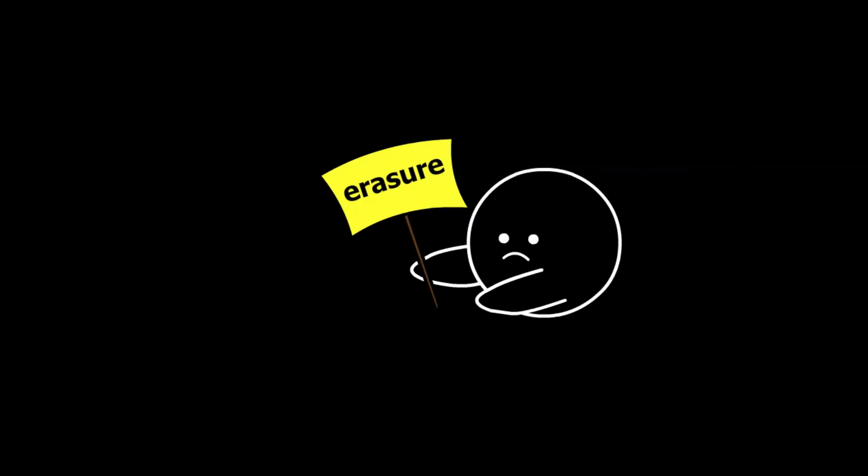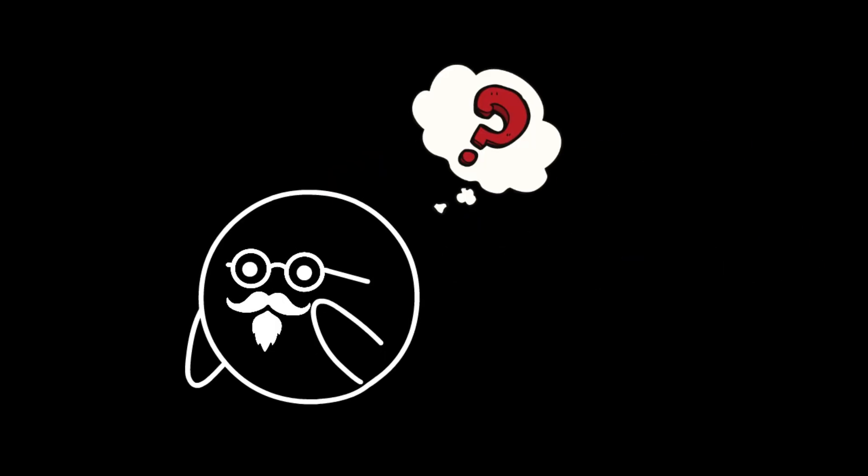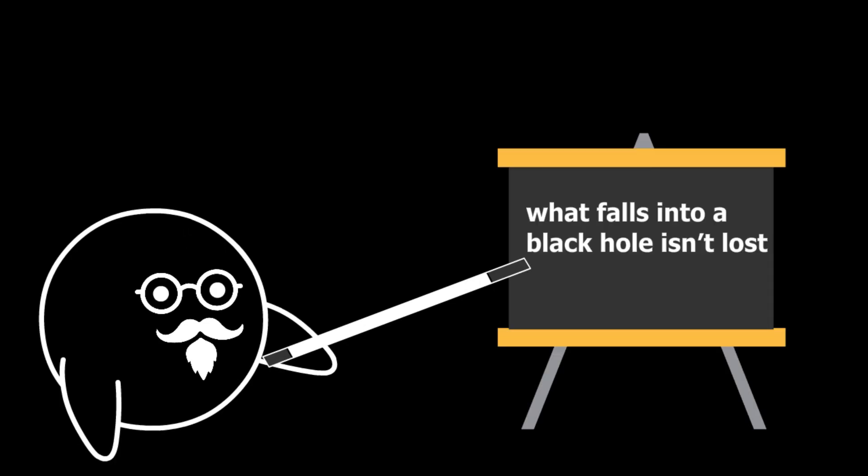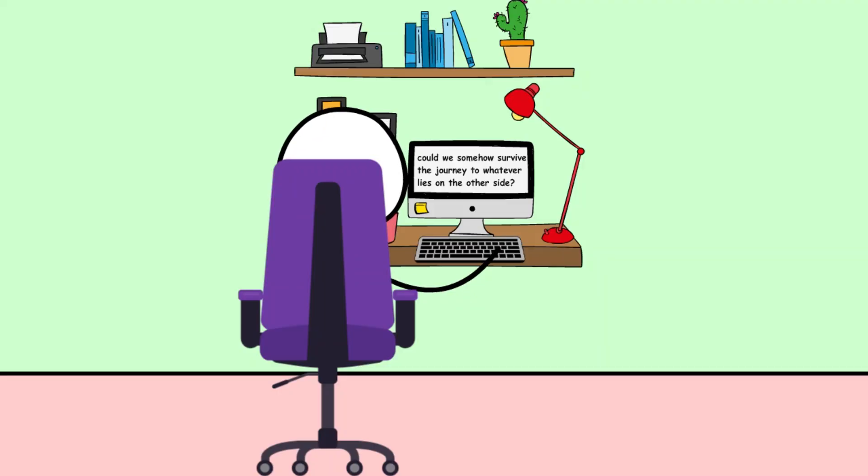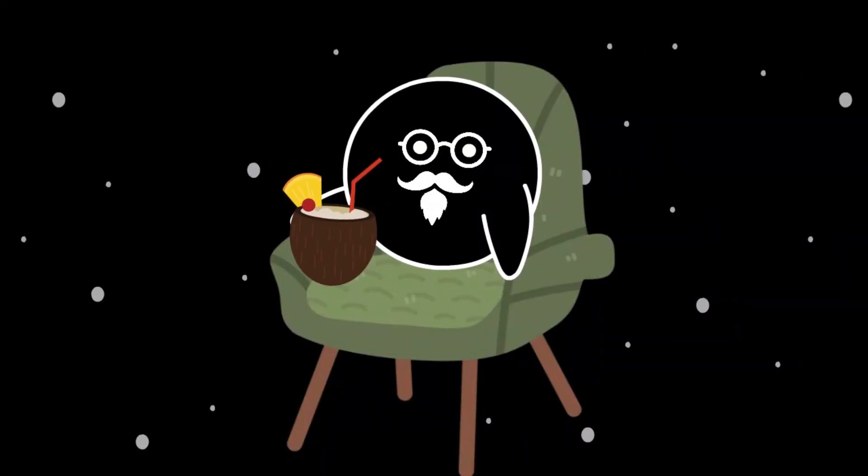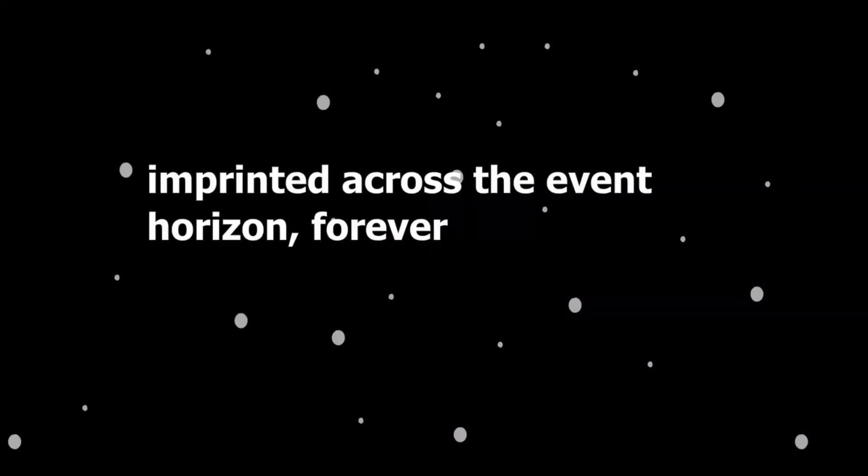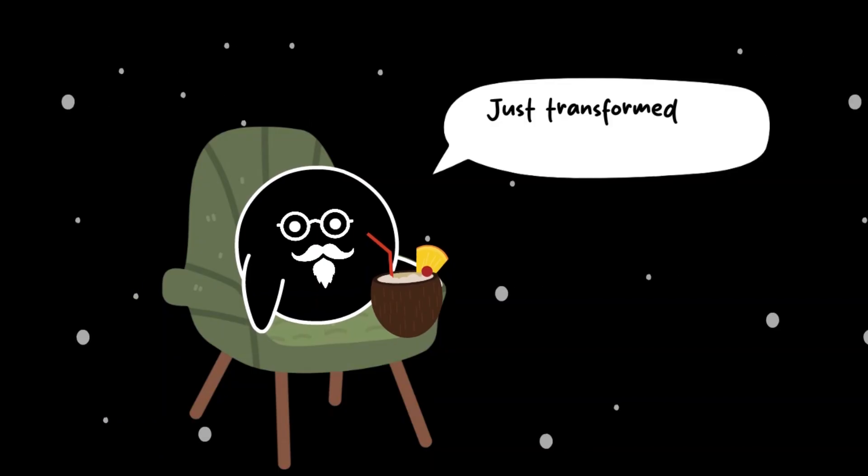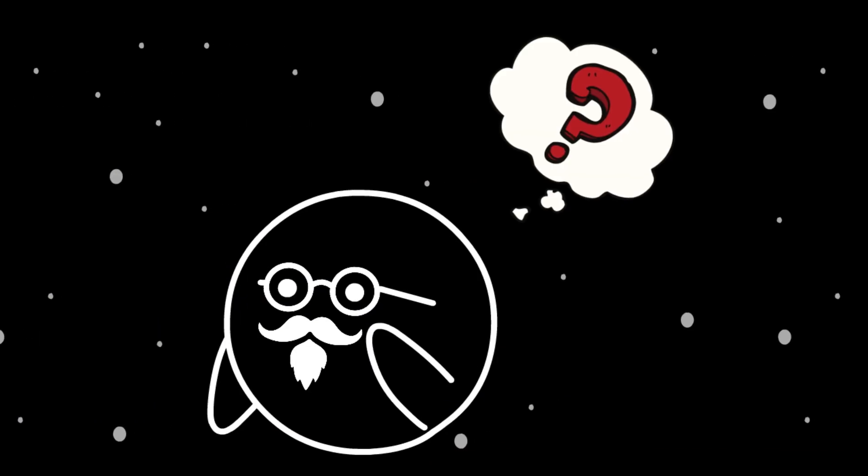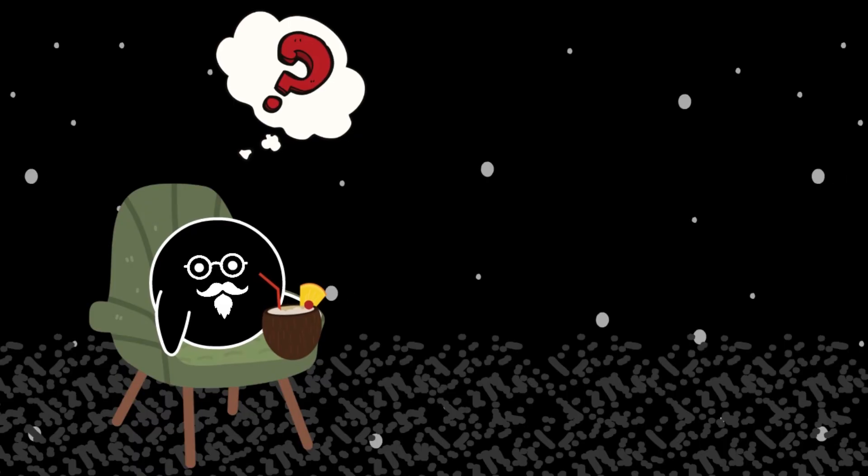But maybe, just maybe, that's not the end. Some theories, like the holographic principle, suggest that all the information about what falls into a black hole isn't lost—just encoded on its surface, like data on a cosmic hard drive. That means in some sense, a shadow of Earth would still exist, imprinted across the event horizon forever. We wouldn't be gone—just transformed.